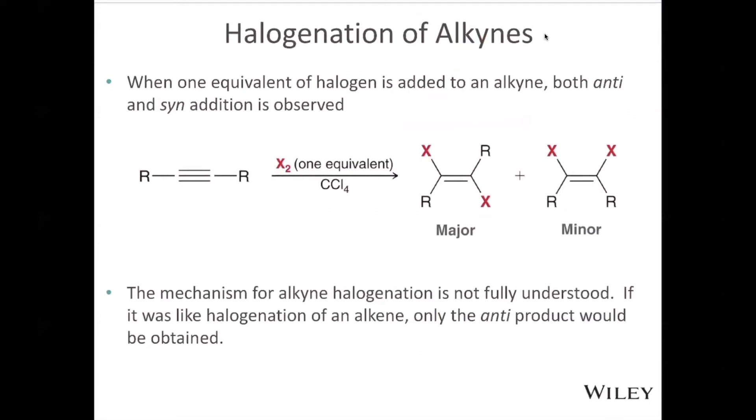If, however, we want to stop it at the alkene, we can add a single equivalent of our Br2 or our Cl2, and we end up with a majority of our product being the trans product and then the minor product being the syn product. But we do stop at the alkene, and we have a halogen on each of those carbons.